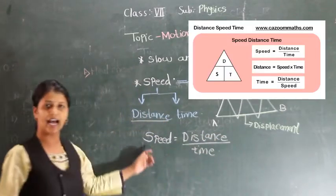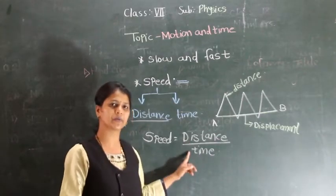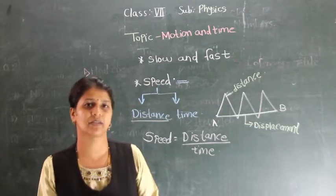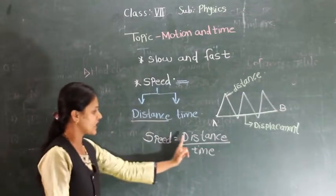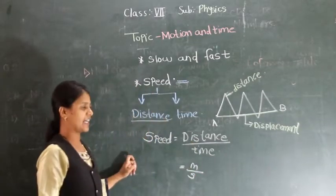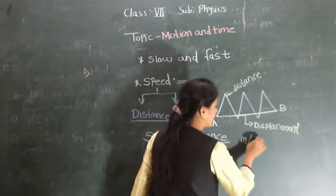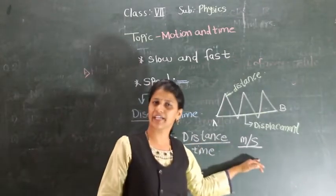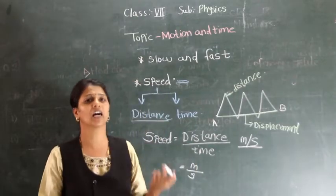Speed is calculated as distance per unit time. Now we need to know the SI unit — the Standard International unit. The SI unit of distance is meter and time is measured in seconds. So the SI unit or standard unit of speed is meter per second. Speed is also calculated in kilometer per hour or kilometer per minute.